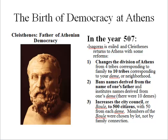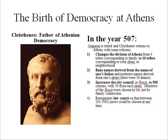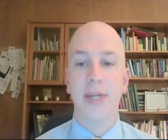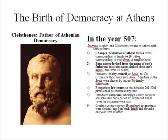Members of the boule were chosen by lot, not by family connection. He also reorganized the law courts so that between 201 and 5,001 jurors could be chosen at any time, to discourage corruption through bribery. He introduced the punishment of ostracism, whereby a citizen could be sent into exile for ten years if 6,000 votes for ostracism were cast. Finally, he created a system whereby ten strategoi, or generals, were elected — one from each deme — and served one-year terms of office. This was truly a radical democracy.